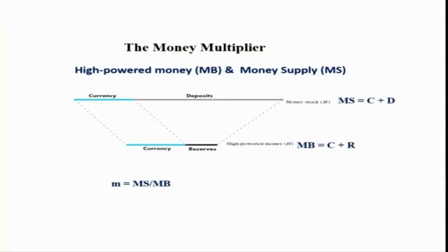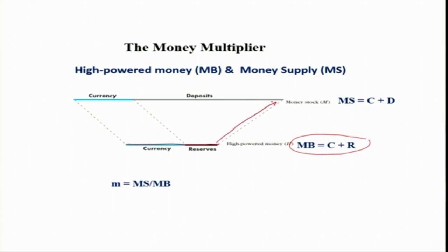The monetary base, which the central bank influences, is equal to currency plus reserve. Through the banking system and the general public, this monetary base MB — that is C plus R — expands into a larger money supply. That expanded distance is the money supply.